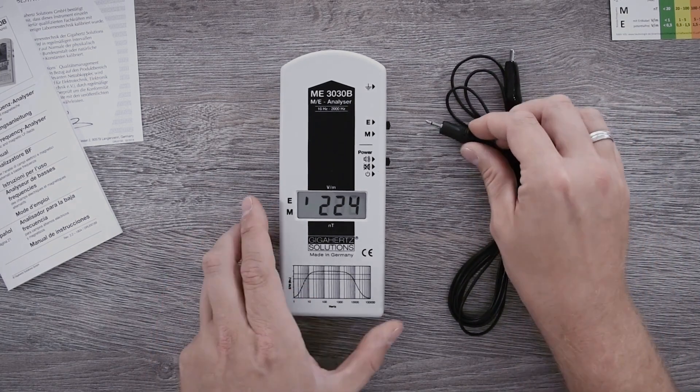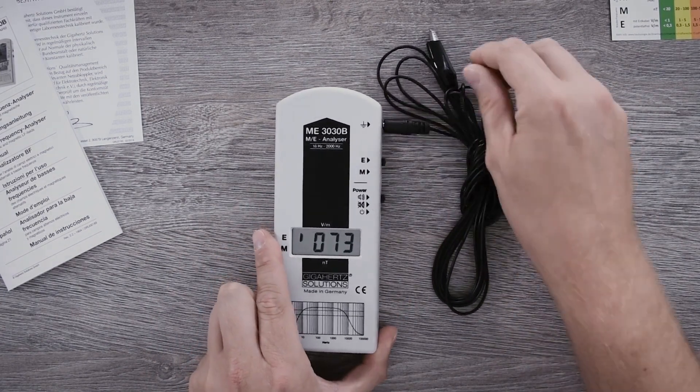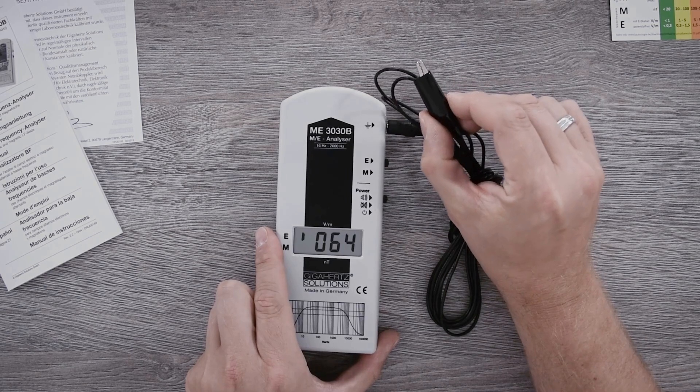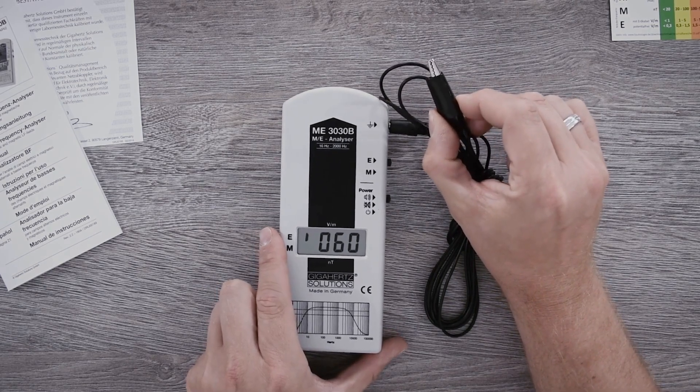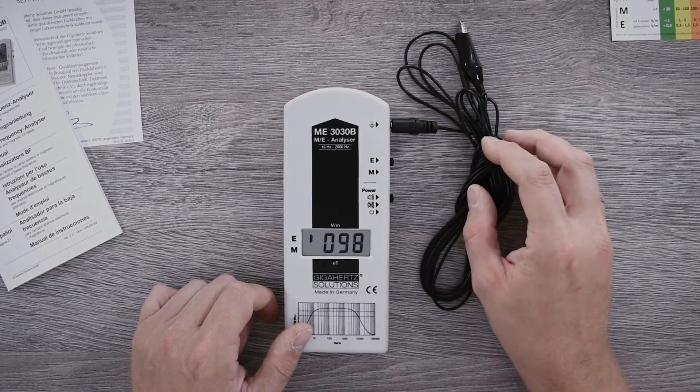For the potential-related measurement, you put this small jack into the socket here and connect the grounding cable with the crocodile clamp at any grounded point, such as the protective contact of a wall socket.